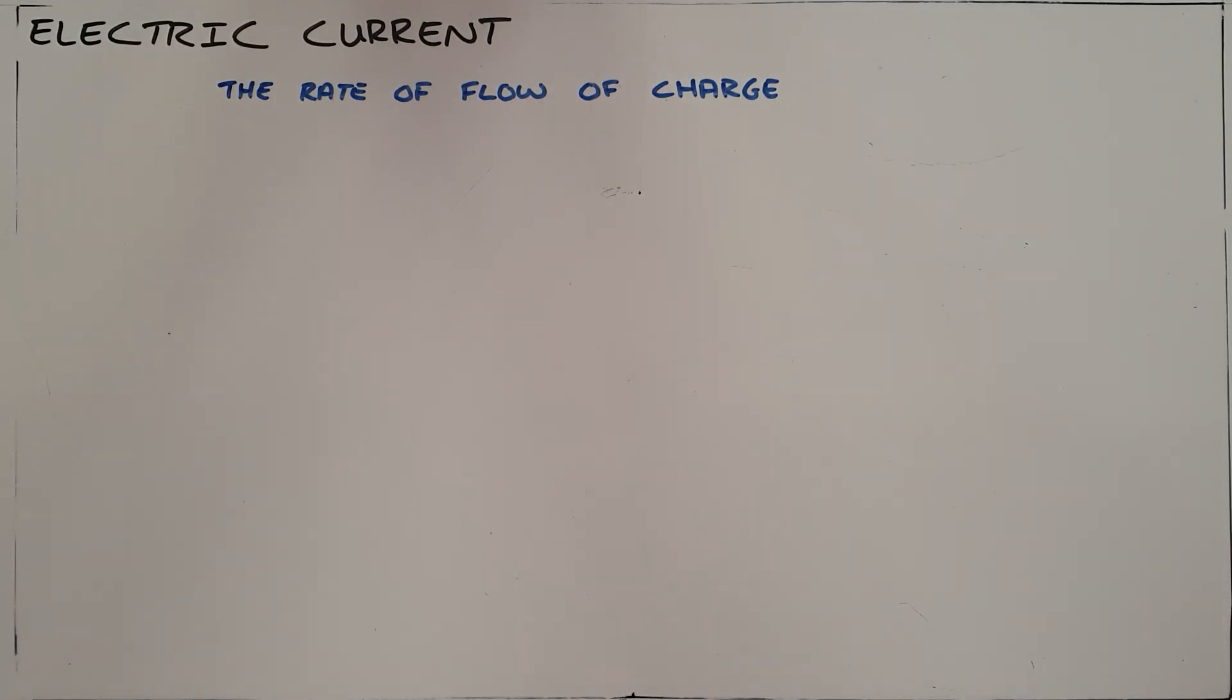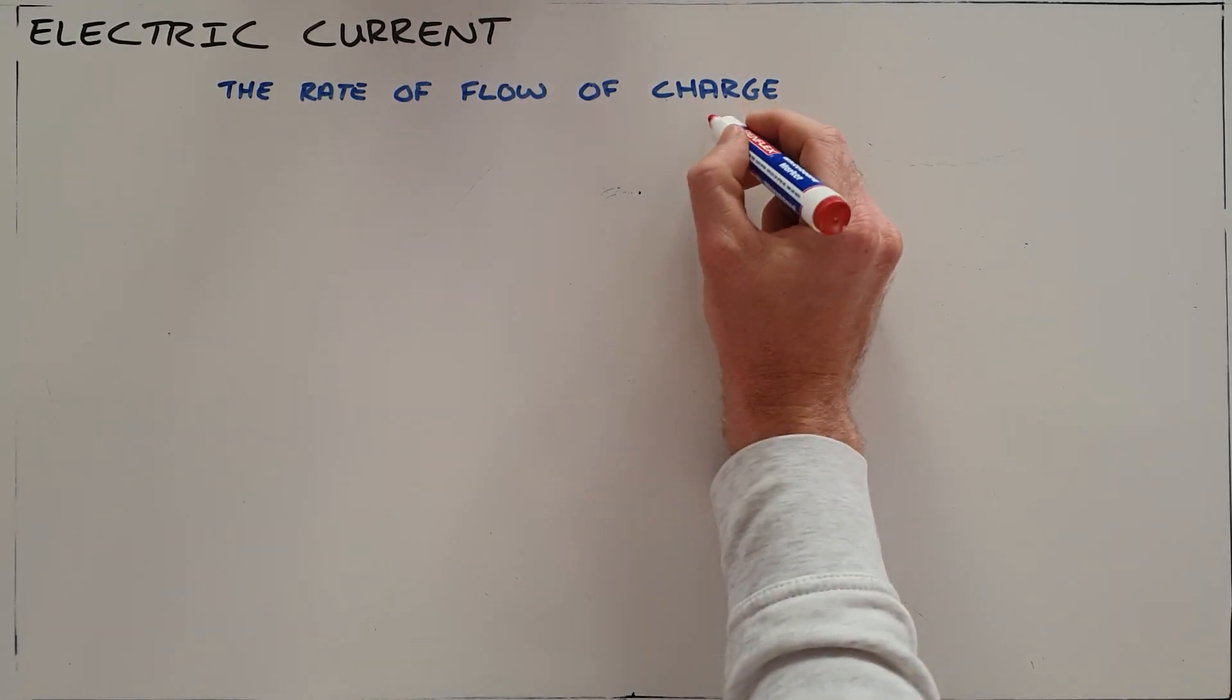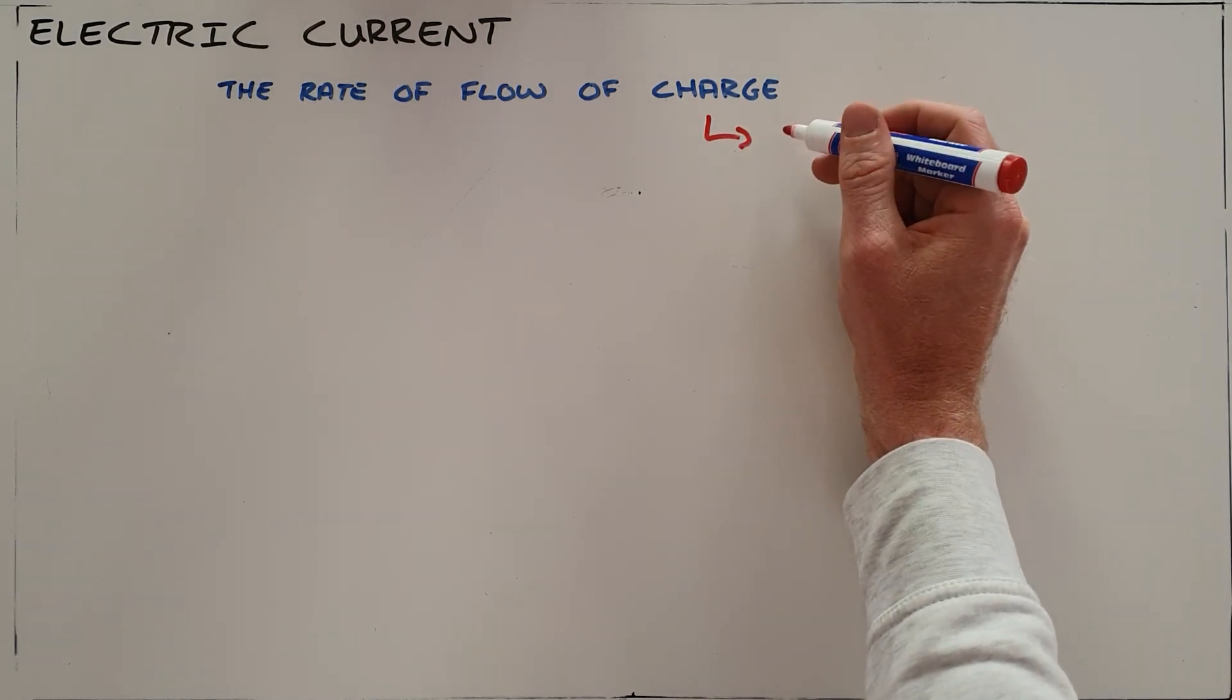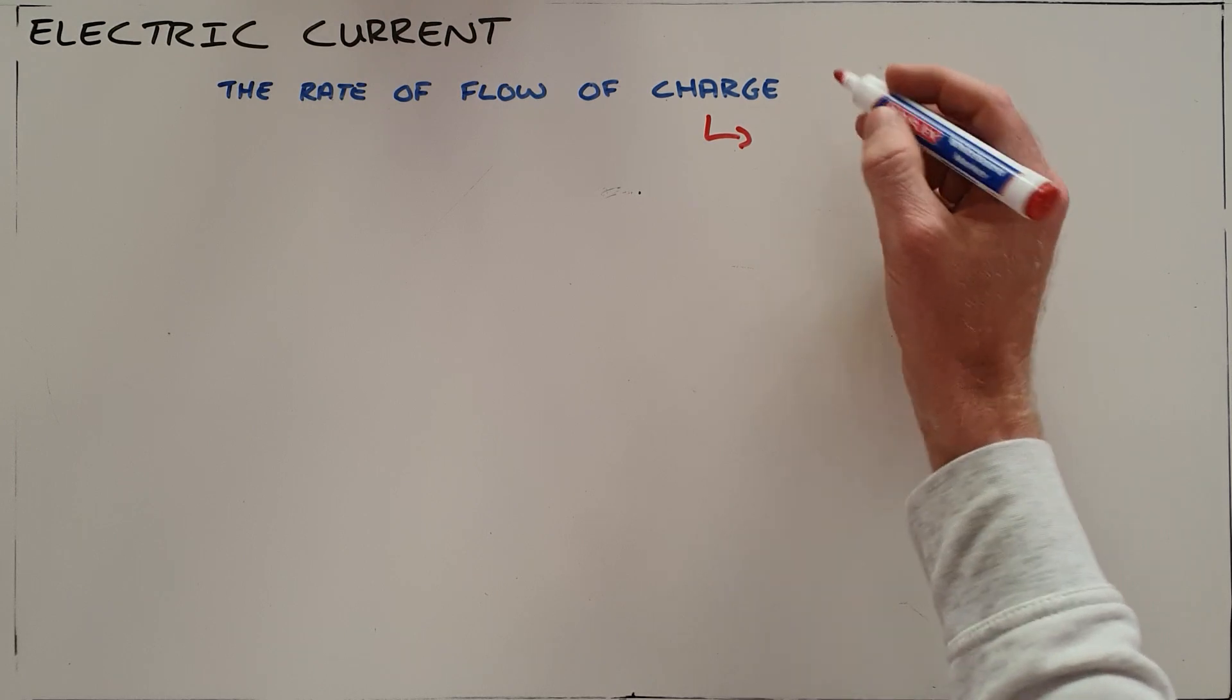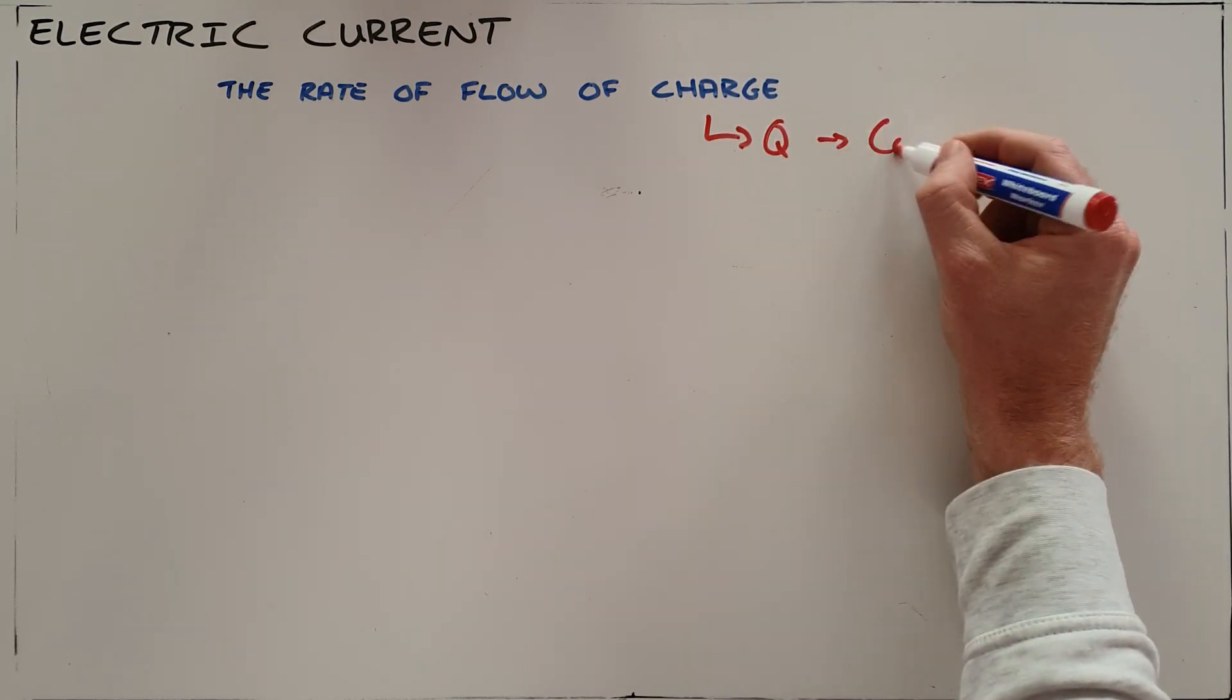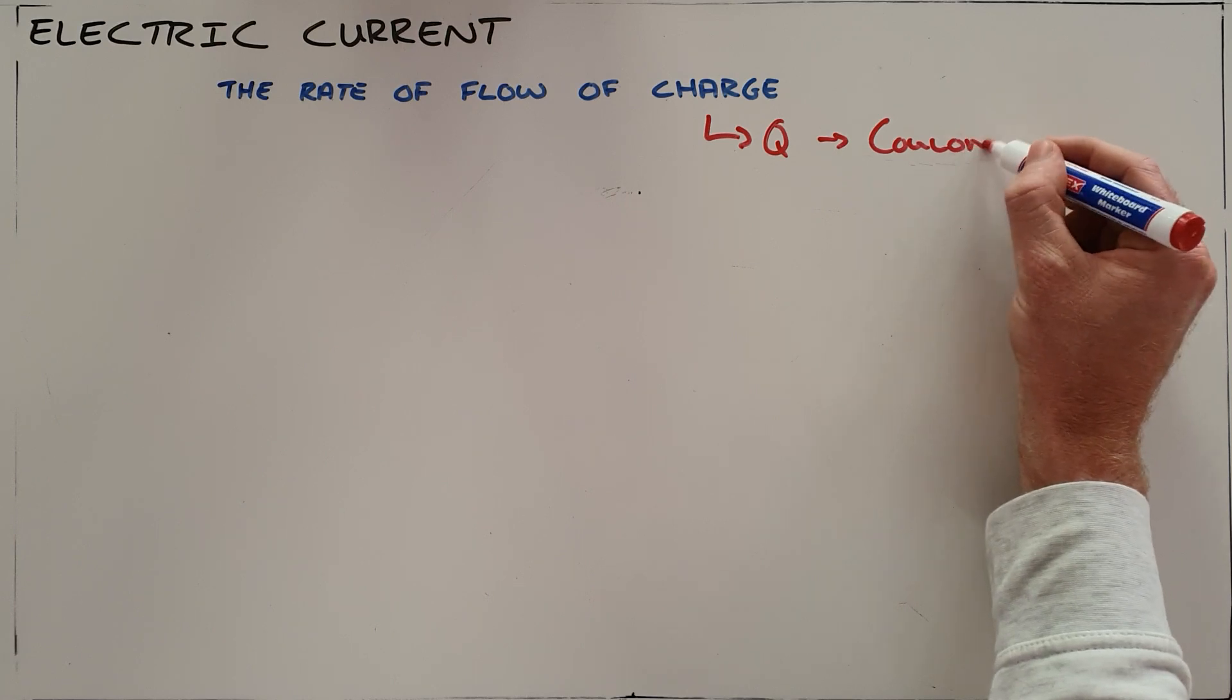Electric current is the rate of flow of charge. Charge is the property of matter that allows it to experience a force in an electric field. Charge has the symbol Q and is measured in coulombs.